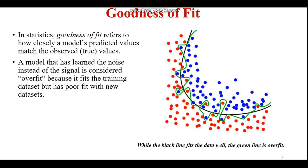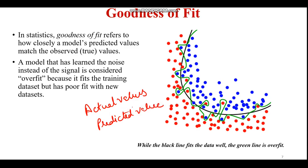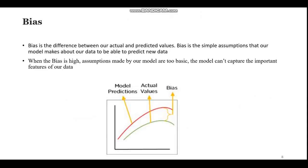Goodness of fit simply refers to how closely a model's predicted values match the true values. We have certain actual values and predicted values output by the model. If the actual and predicted values are very close — meaning there is the least difference between them — we consider it a good fit. A model that has learned the noise instead of the signals is known to be overfit, because it fits the training dataset but performs poorly on new data.